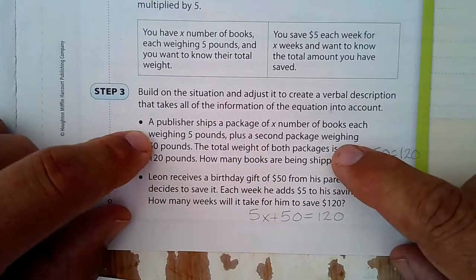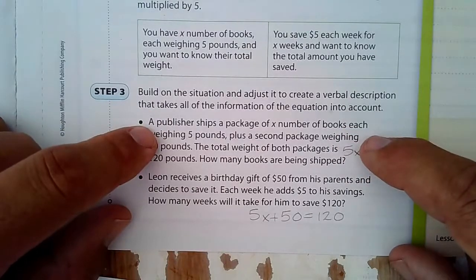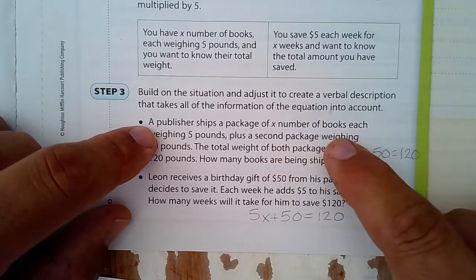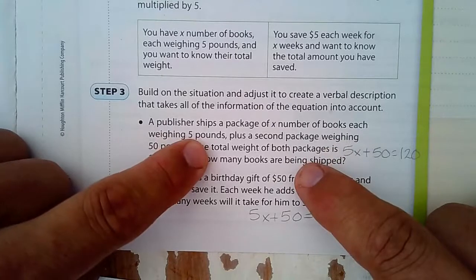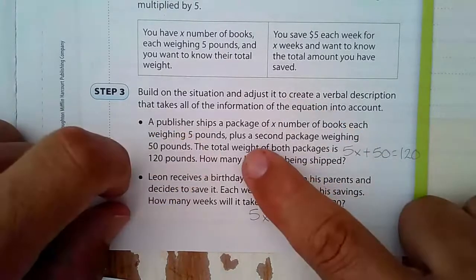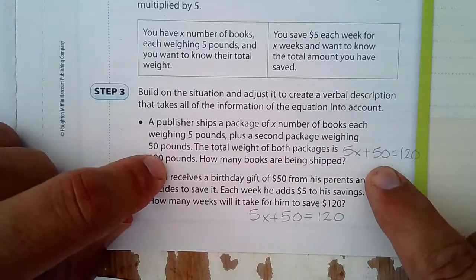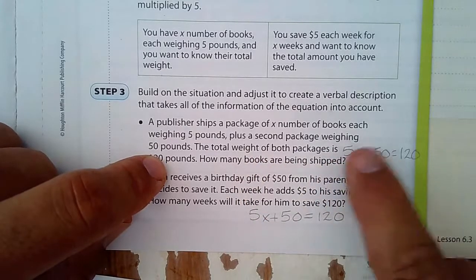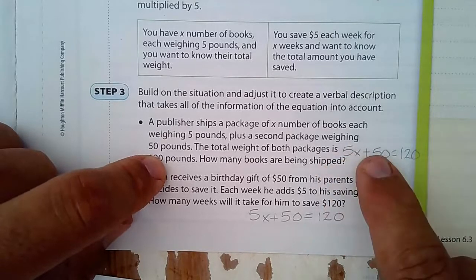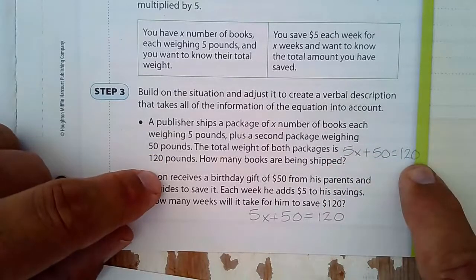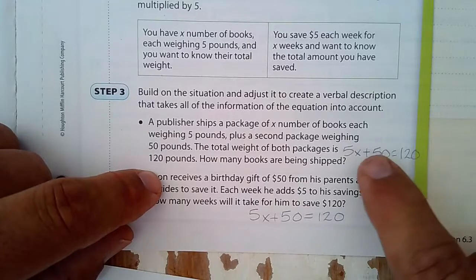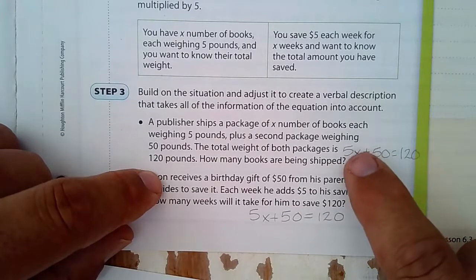In this example, a publisher ships a package of x number of books, each weighing 5 pounds. So there's your 5 times x. Plus a second package weighing 50 pounds. So there's your plus 50. And the total weight of the packages, so the total of these two, total means you have to add them, is 120. So how many books are being shipped? X is the number of books. So you're solving for x.